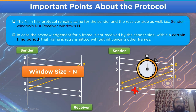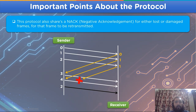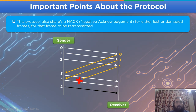In case a frame is not received by the receiver side, it will send a negative acknowledgement signal to the sender side so that it can retransmit only the damaged frame. This point forms the basis of the working process involved in the SRP protocol.